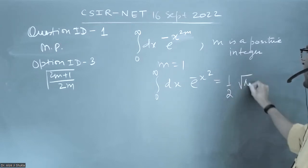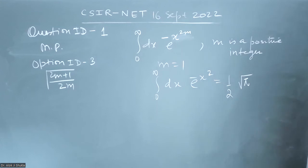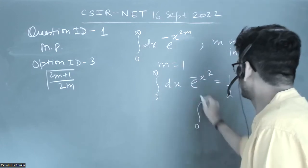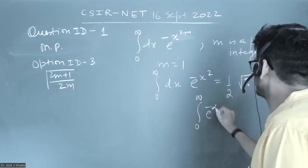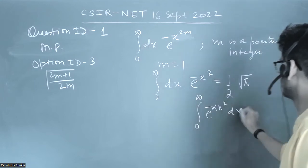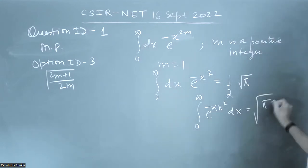Because we know that integration 0 to infinity e to the power minus alpha x square dx is equal to under root pi by alpha, and half of under root pi by alpha.